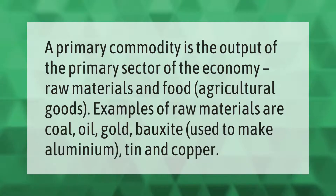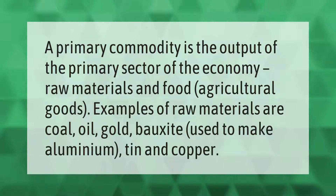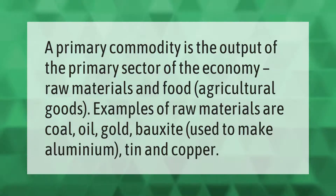A primary commodity is the output of the primary sector of the economy — raw materials and food agricultural goods. Examples of raw materials are coal, oil, gold, bauxite used to make aluminium, tin, and copper.